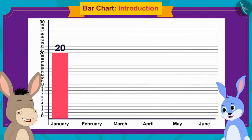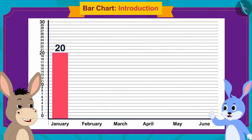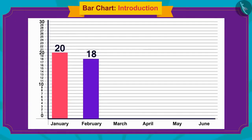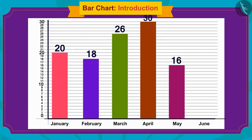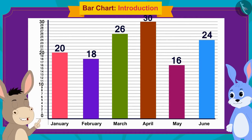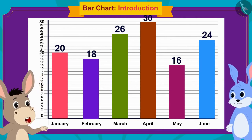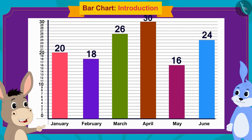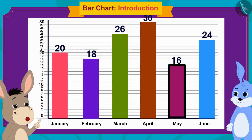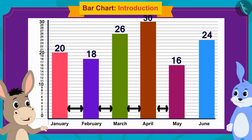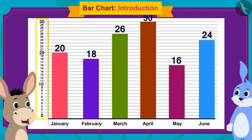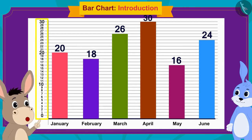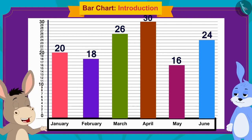Now I will make a rectangle with a height reaching number 18 for the amount saved in February. Bunny and Bhoala together made rectangles for all months. Our bar chart is ready. Here, the height of each bar shows you the amount saved in that month. The bars in the bar chart are rectangles of exactly the same width and the space between them is also equal. On the vertical line, I have written equally spaced numbers from 1 to 30 to show the amount saved. And on the horizontal line, I have written the names of the months.